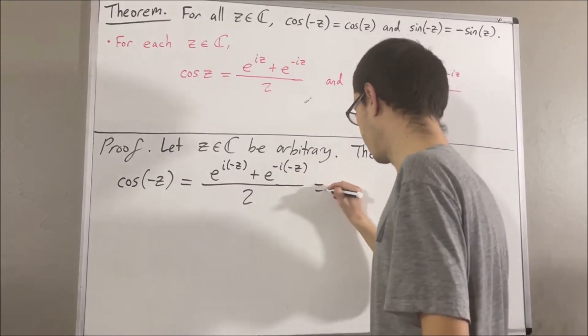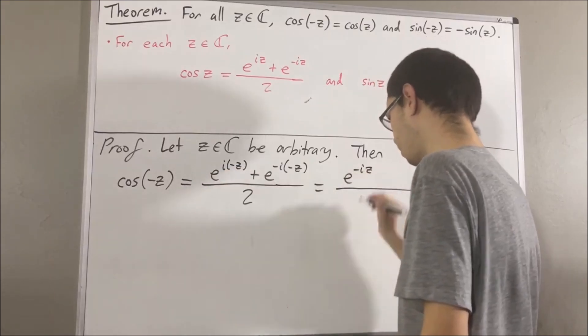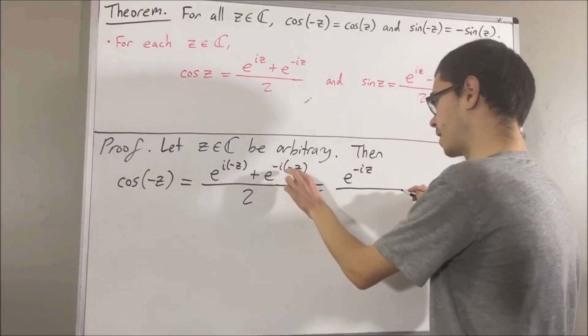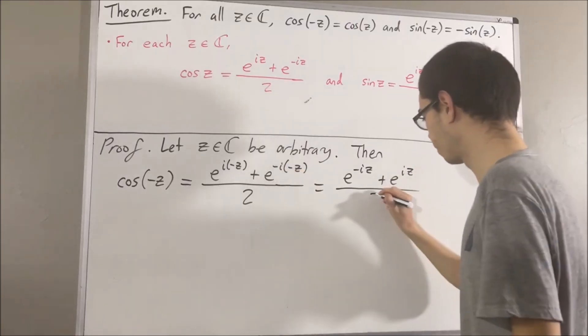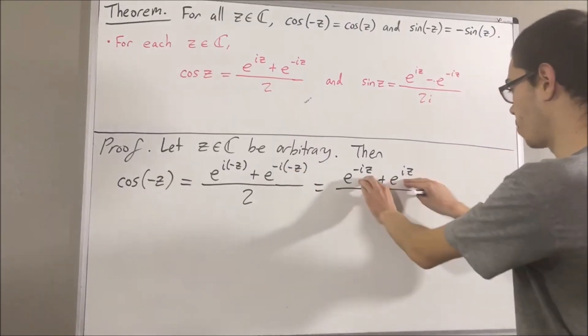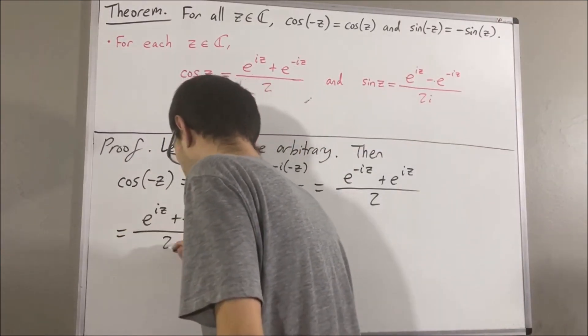We know that i times negative z is negative iz, and negative i times negative z is iz. So let's swap the two terms in the numerator to get e to the iz plus e to the negative iz over 2.